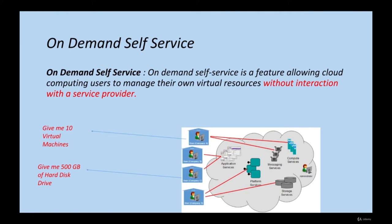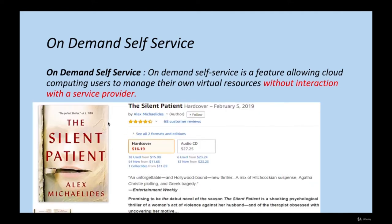A good example of on-demand self-service outside of cloud is Amazon's shopping website — whenever you need a book, you log into the Amazon portal and order it. That is a self-service. Similarly in cloud, whenever there is a need, you just log in and order those services. So on-demand self-service is the first characteristic. Hope you enjoyed this lecture — thank you for watching, see you in the next one.